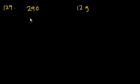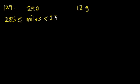If this is rounded to the nearest 10, then her miles had to have been greater than or equal to 285, because anything 285 or more would have been rounded to 290, but then less than 295. Because anything less than 295 would be rounded down, but 295 itself would be rounded up to 300.